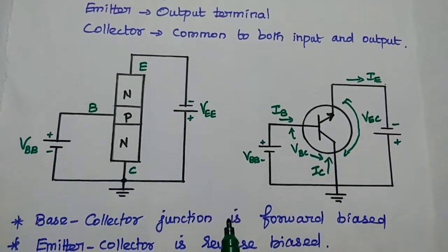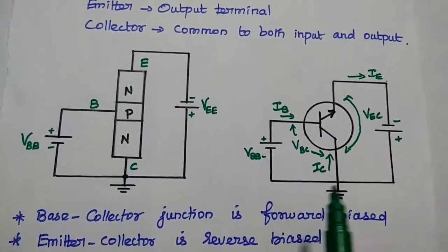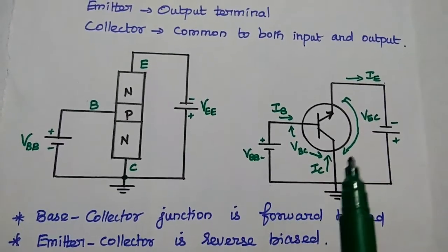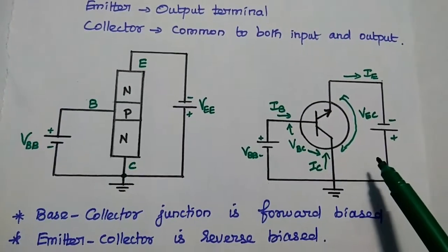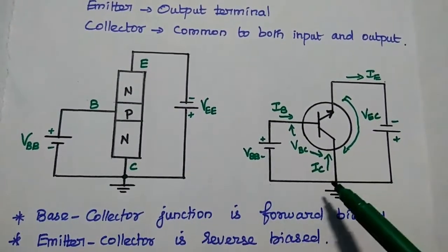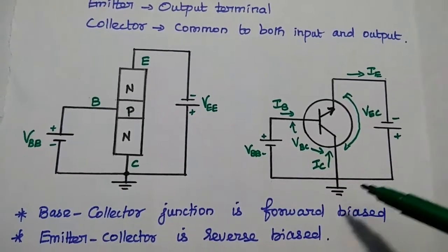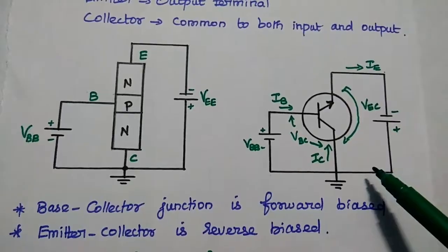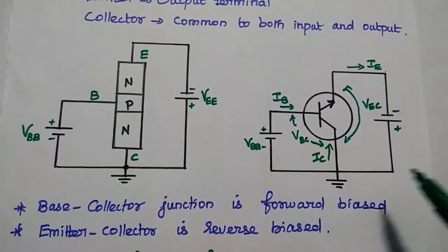In order to make the transistor work in the desired operating condition, we have to ensure that the input side is forward biased and the output side is reverse biased. Here, the base-collector junction is forward biased and the emitter-collector junction is reverse biased. In this condition, the transistor is working in the active region.